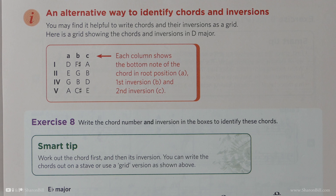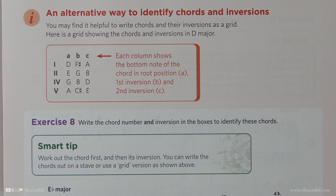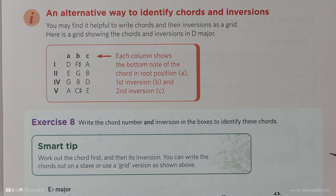Let's press on to Grade 5, page 57. So we're continuing to look at chords and inversions in the Grade 5 Discovery Music Theory workbook, page 57. And we move on to exercise 8.